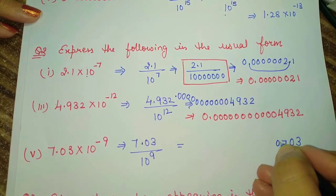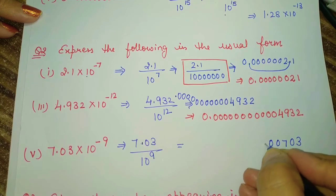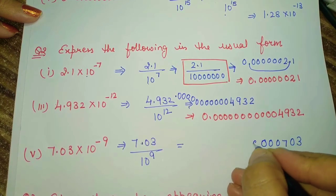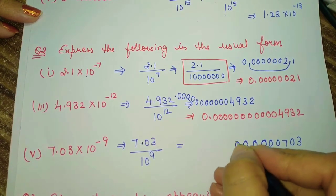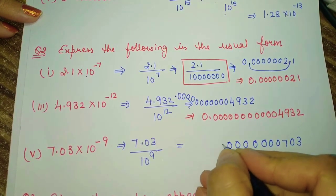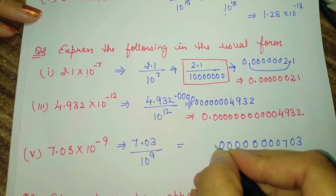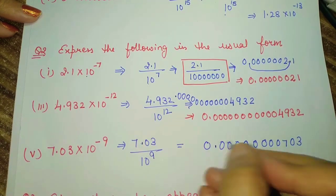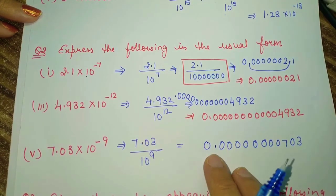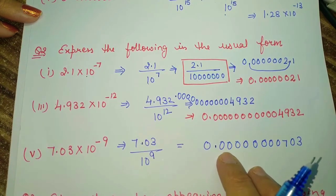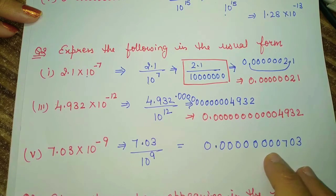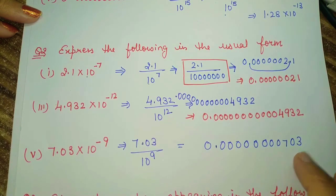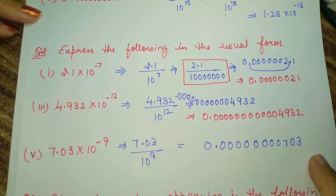Counting the digits from the decimal point: 1, 2, 3, 4, 5, 6, 7, 8, 9 — the decimal shifts 9 places to the left. Now the decimal is here, so we can write this number as 0.00000000703.